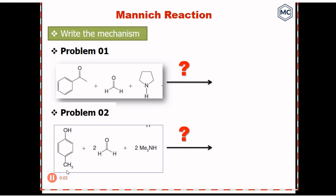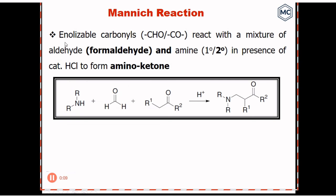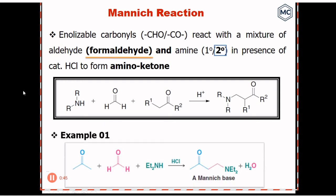Then you can select and explain your content. For example, I want to take a class on the Mannich reaction. The Mannich reaction is an alpha-substituted carbonyl reaction — it reacts with a mixture of aldehyde and amine in the presence of a catalytic amount of acid to form an amino ketone. This is the general scheme: amine with formaldehyde and ketone in the presence of acid gives amino ketone. You get a cursor here and you can use animation.